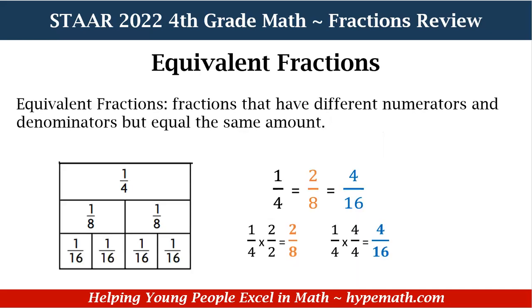When we're looking for equivalent fractions, what we need to do is find a fraction that has a different numerator and denominator, but equals the same amount. That's what equivalent fractions are — a different numerator and denominator, but equal the same amount. Let's look at our examples. We see we have one-fourth, which is equal to two-eighths and also four over sixteen. So you may be asking yourself, how do we get two-eighths? I'm glad you asked.